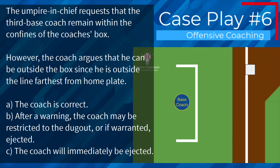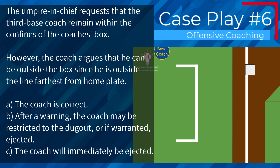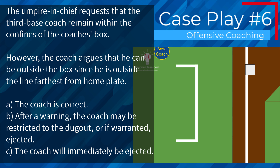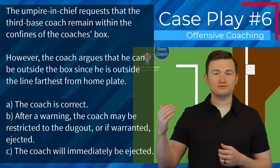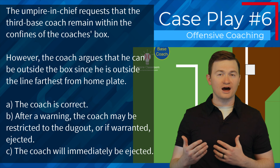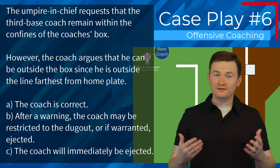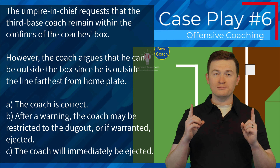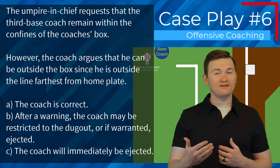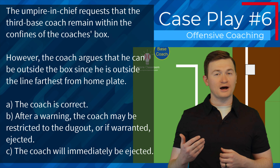Case play number six: the umpire in chief requests that the third base coach remain within the confines of the coach's box. However, the coach argues that he can be outside of the box since he is outside the line furthest from home plate. Is this A, the coach is correct; B, after a warning the coach may be restricted to the dugout or if warranted ejected; or C, the coach will immediately be ejected? The correct answer is B — generally we don't need to enforce the coach's box, but if the opposing manager complains about a coach being outside of the box, we have to enforce it. This could mean a coach has to move closer to the plate to be in compliance, and their failure to comply with our direction can result in a warning and possible ejection.